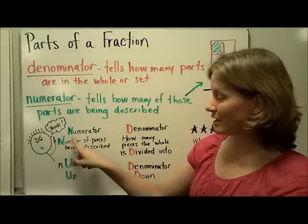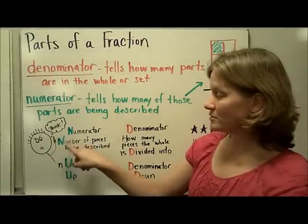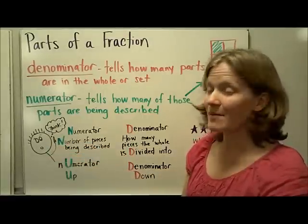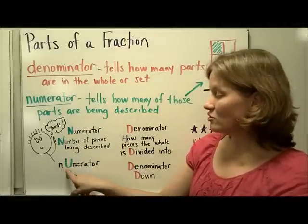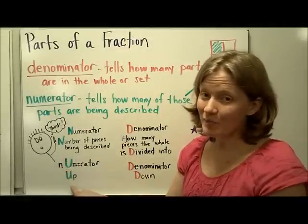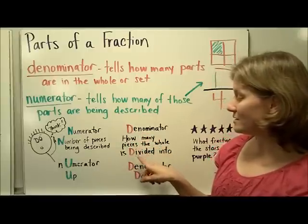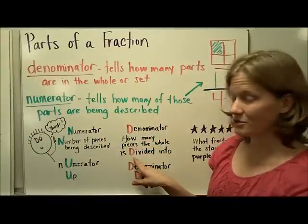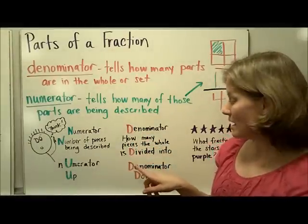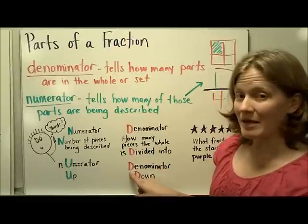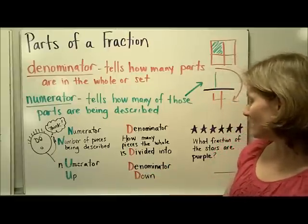If you have a hard time remembering those words, here's two ways that you can think about it. The numerator starts with an N, and that could stand for the number of pieces being described. Also, the numerator has a U in it, and it's up on the top of the fraction. A denominator tells how many pieces the whole is divided into. You see D divided, and the denominator is down in the fraction.